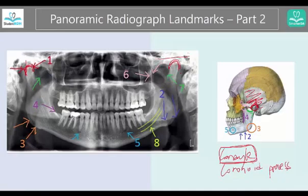This part towards the edges of the radiograph is the condyle, whereas the coronoid process is going to be a structure that's more towards the midline. We're already giving you the answer to number six, but this is how we remember it.